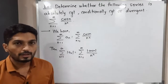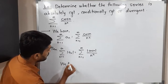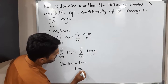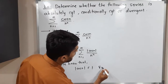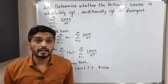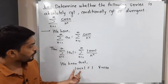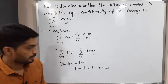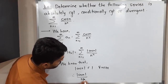We know that mod cos n is always less than or equal to 1. This is true for any n belonging to the set of natural numbers. We know that mod cos θ is always less than or equal to 1 for any angle θ, so therefore mod cos n is also less than or equal to 1. Dividing both sides by n squared, we get mod cos n upon n squared is less than or equal to 1 upon n squared.